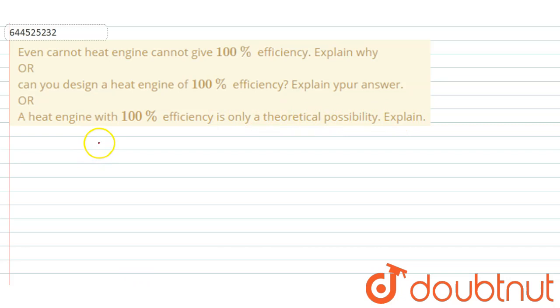We know that if a heat engine is working between temperature limits T1 and T2, where T1 is higher temperature and T2 is lower temperature, and if we are getting W work from it, then efficiency of heat engine is given by 1 minus T2 by T1, where T2 is lower temperature and T1 is higher temperature.